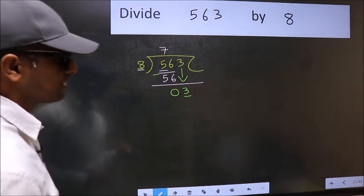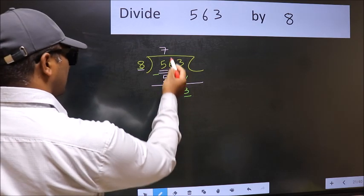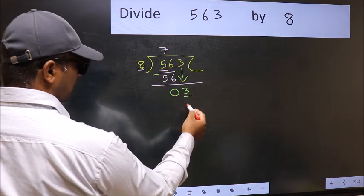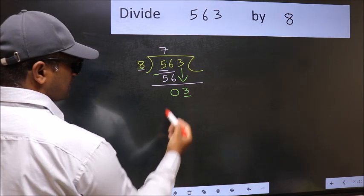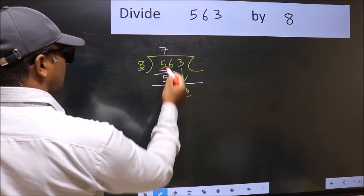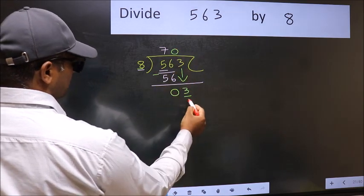what you should think of doing is which number should we take here. If I take 1, we will get 8, but 8 is larger than 3. So what we should do is take 0. So 8 into 0 is 0.